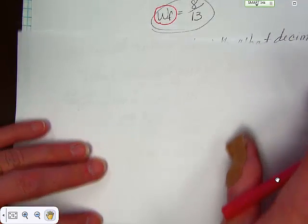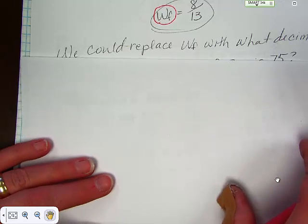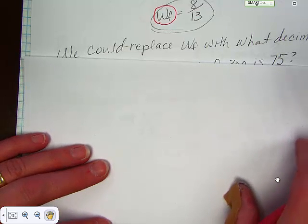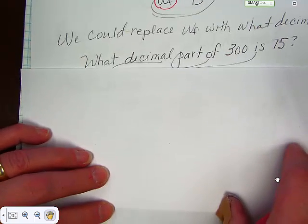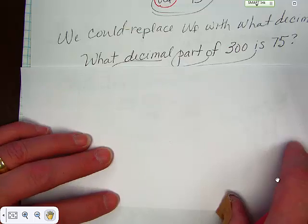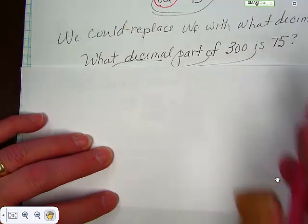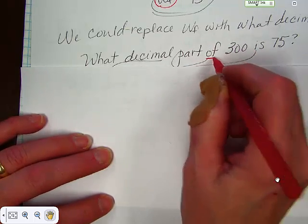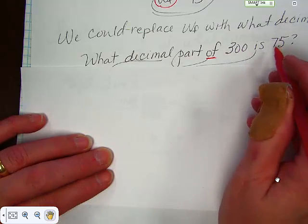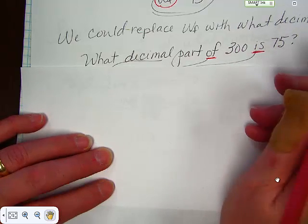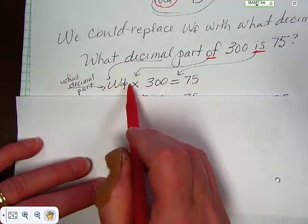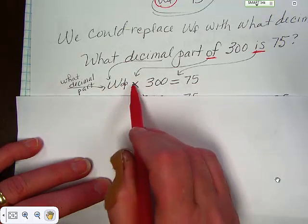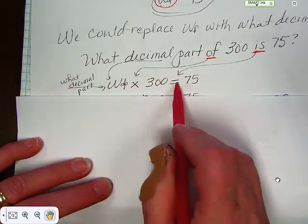Okay, going on, we could replace the word what fraction with what decimal, and in that case it would look like this: what decimal part of 300 is 75? Of means multiply, is means equal, so we rewrite it: what decimal part (WDP) times 300 equals 75.